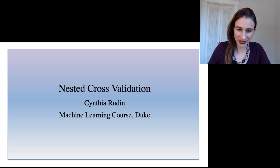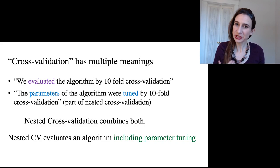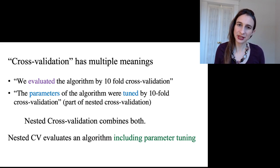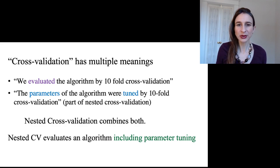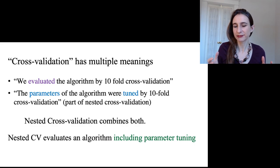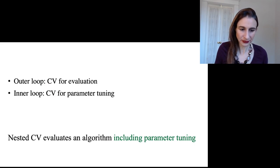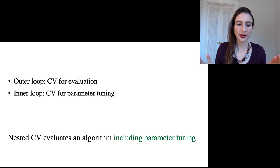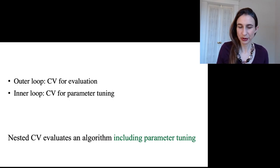This video is about nested cross-validation. As mentioned earlier, cross-validation has multiple meanings: one for evaluation purposes and another for tuning parameters. Nested cross-validation combines both — it evaluates an algorithm in a way that includes the parameter tuning as part of the algorithm. There is an outer loop, which is a standard evaluation loop, and an inner loop that does the parameter tuning.